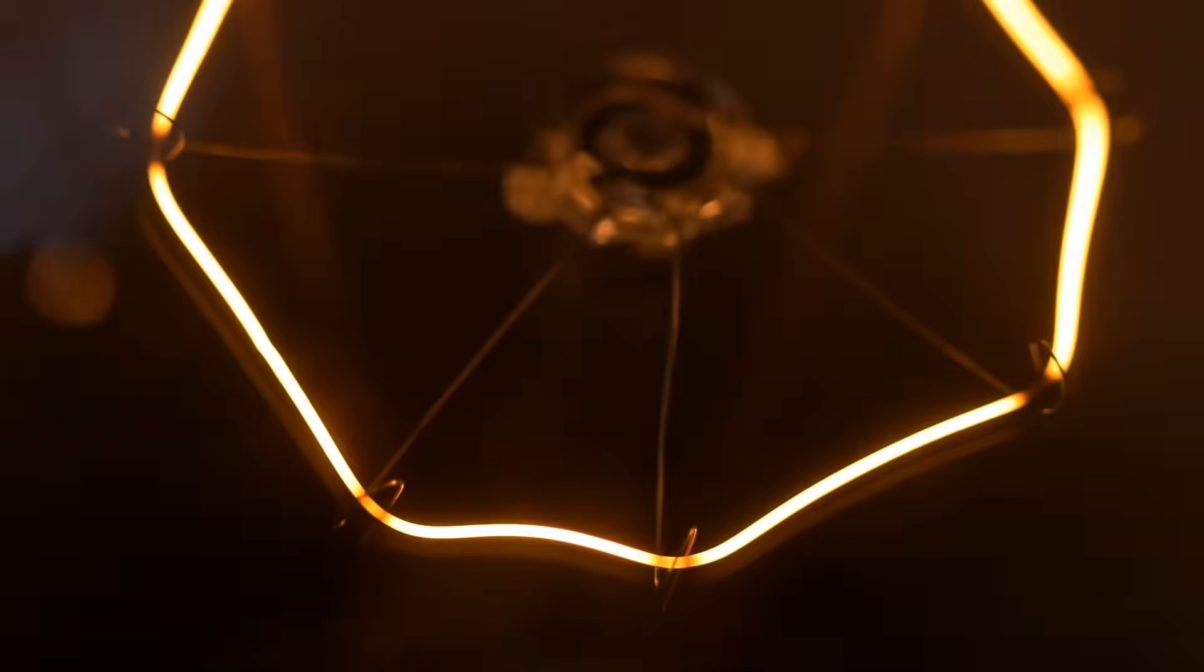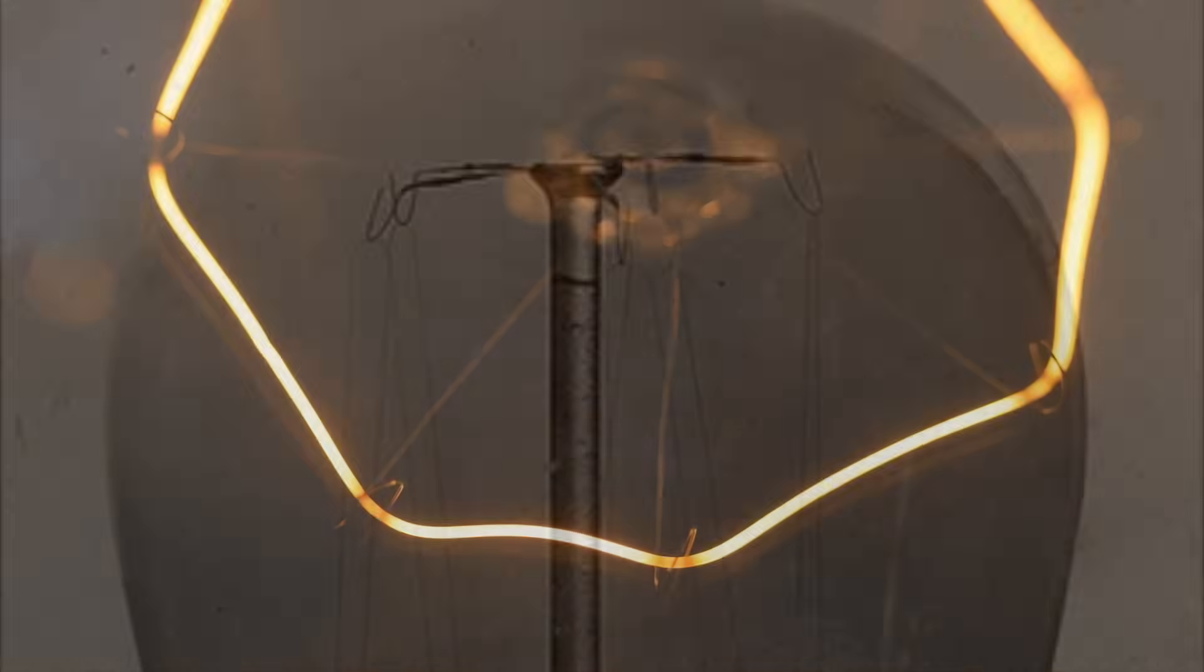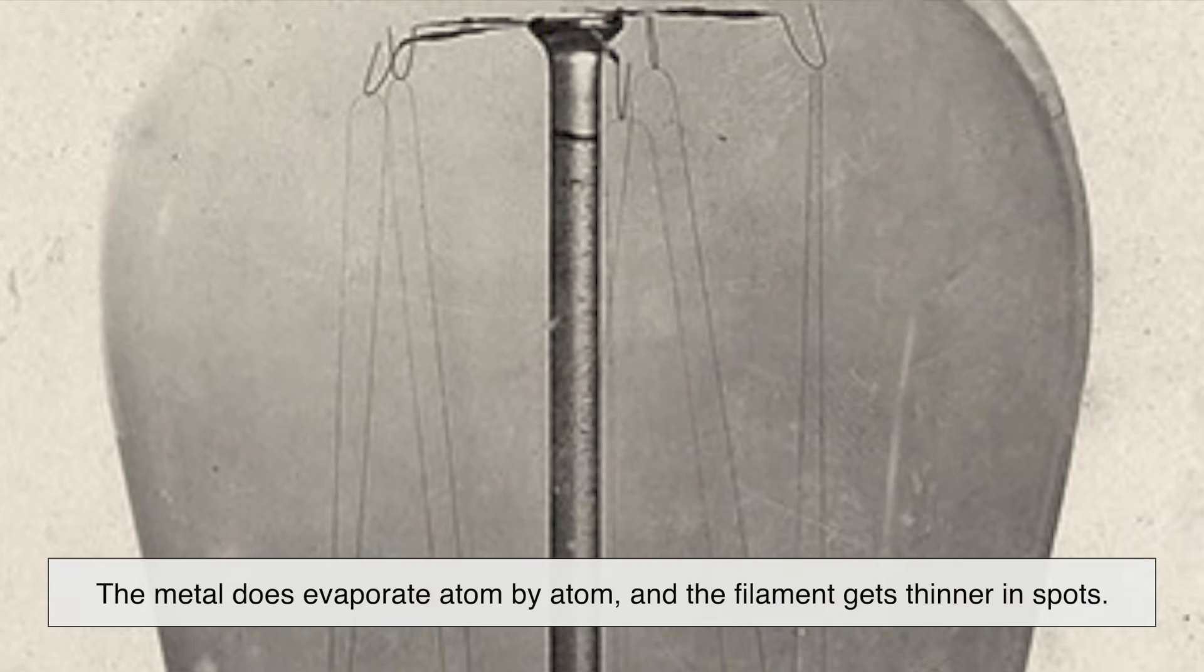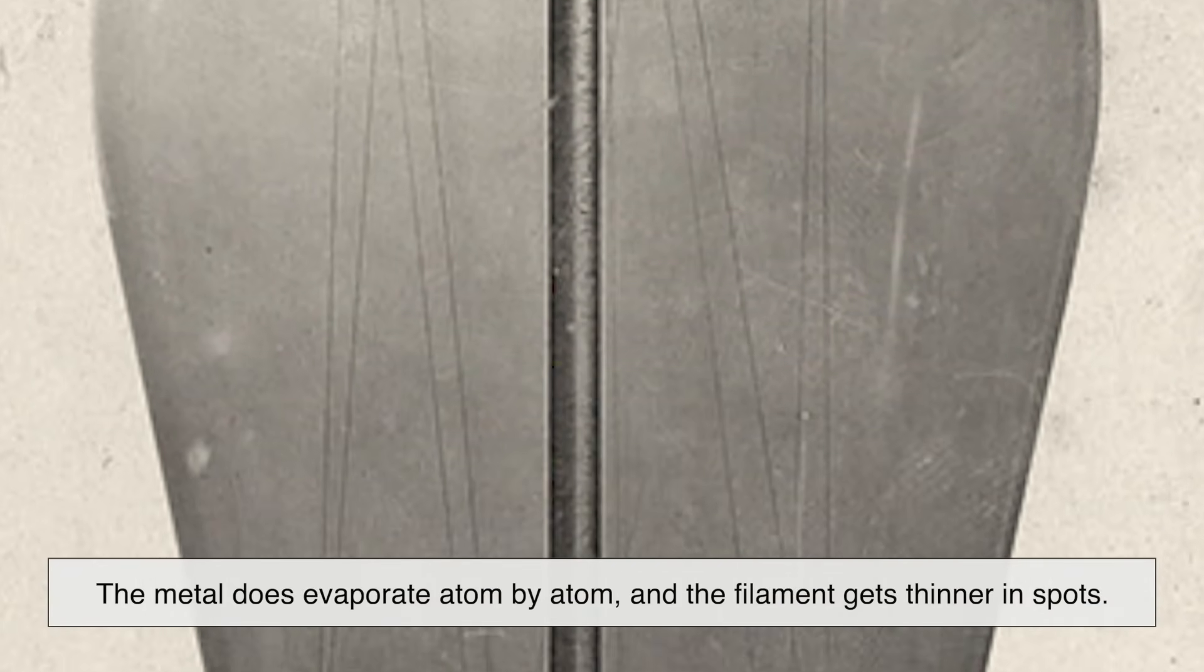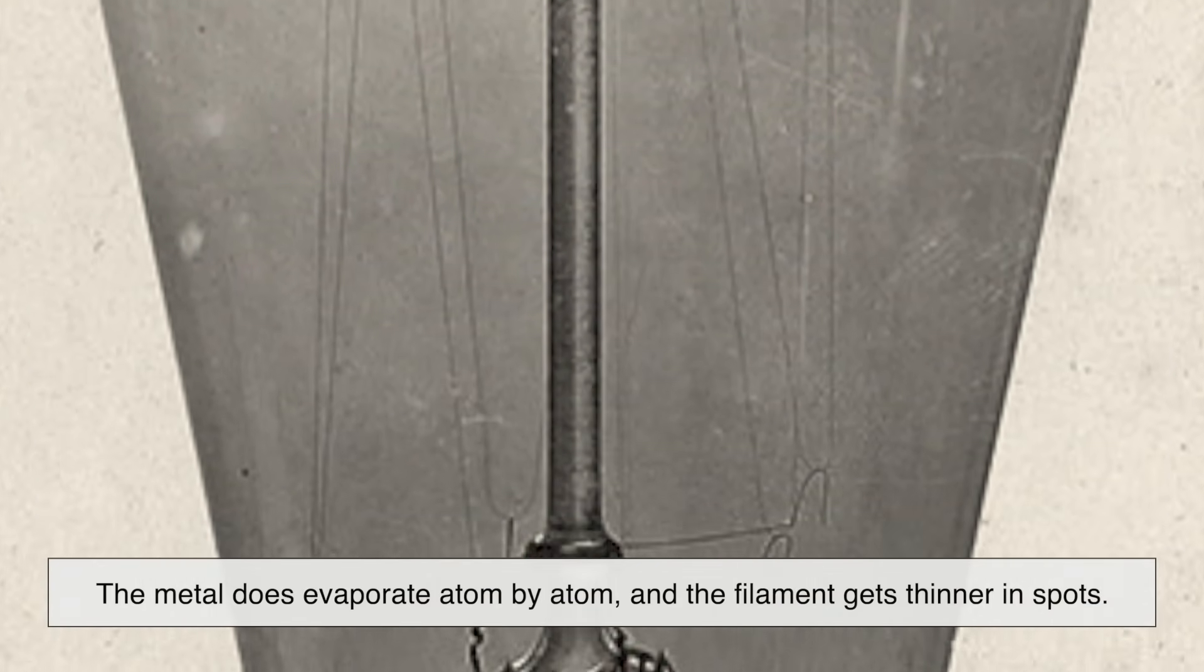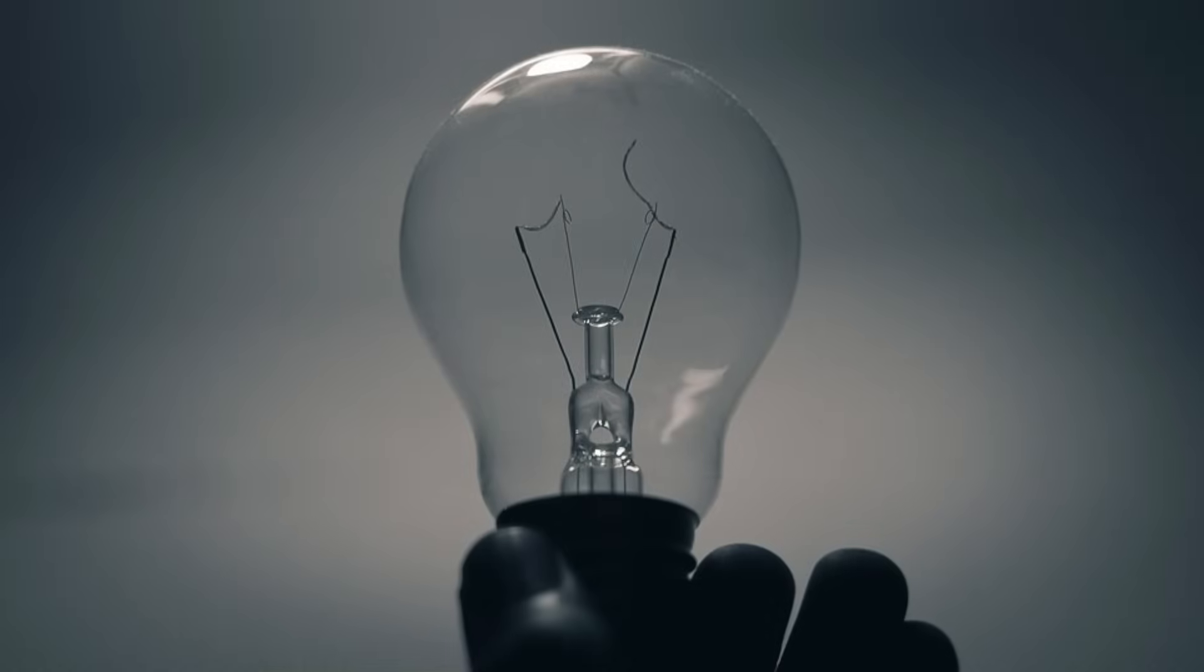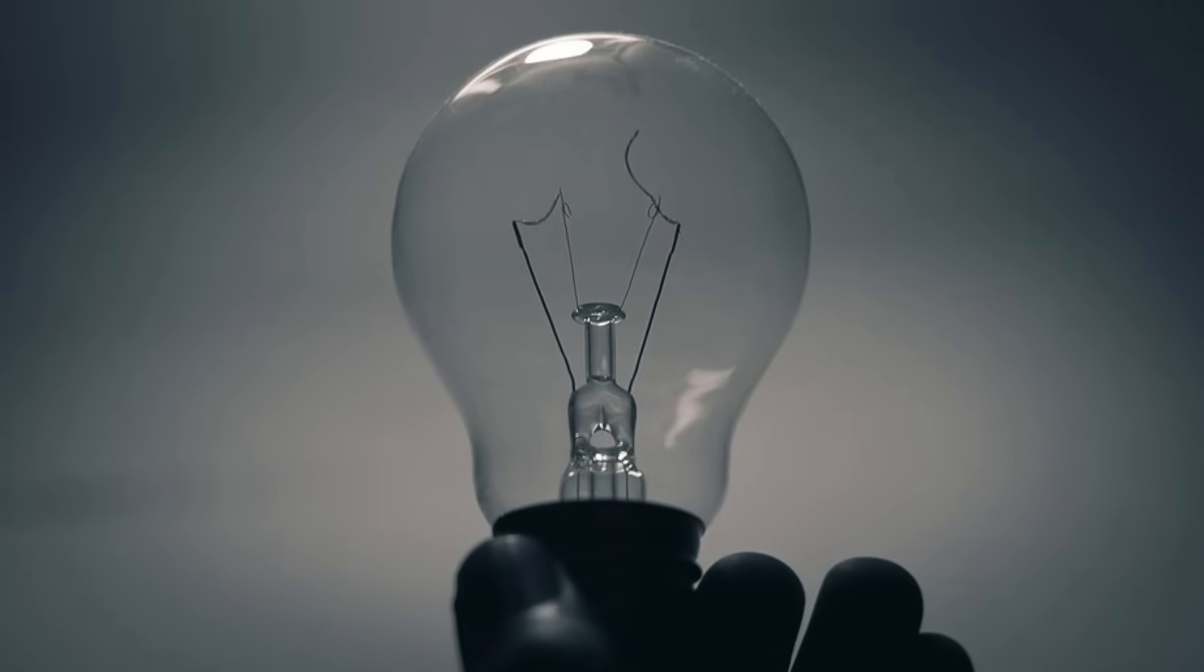Even though tungsten is tough, it's not invincible. Over time, the metal does evaporate atom by atom, and the filament gets thinner in spots. Eventually, it forms a weak point that breaks,